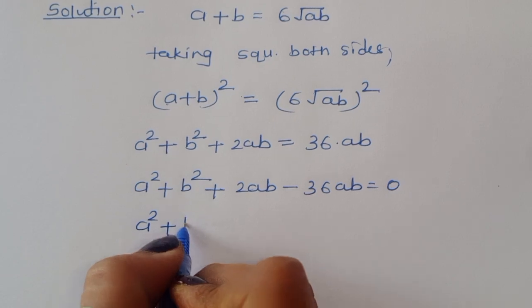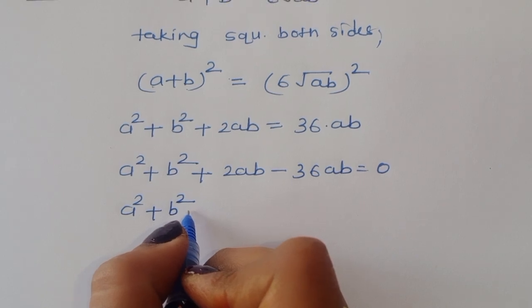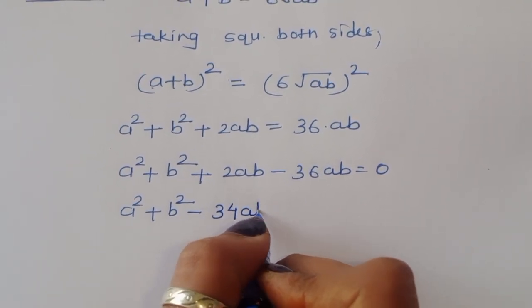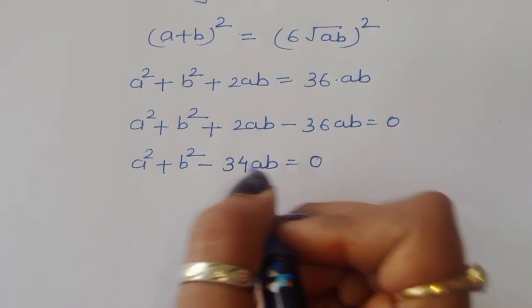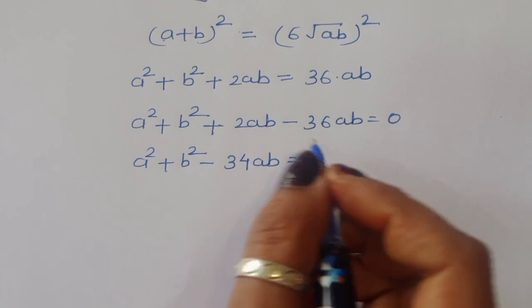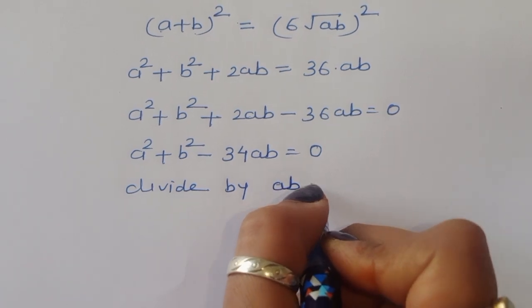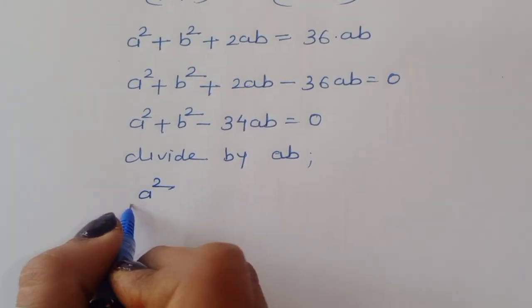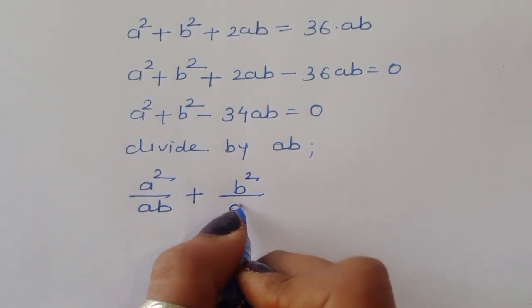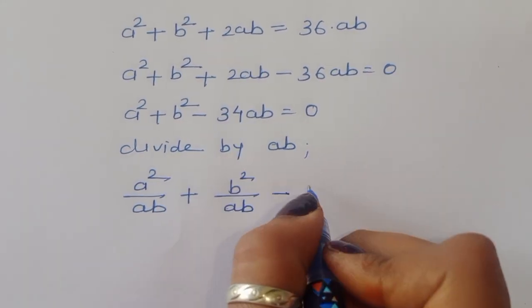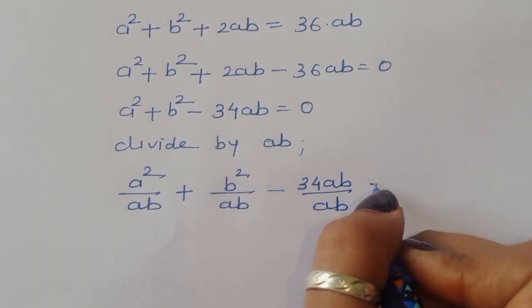Therefore, a squared plus b squared plus 2ab minus 36ab gives us a squared plus b squared minus 34ab is equal to 0. Now we can divide every term by ab, giving a squared over ab plus b squared over ab minus 34ab over ab equals 0.